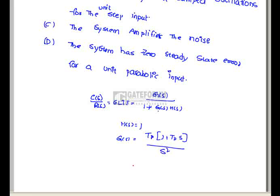But Statement C: The system amplifies the noise. Adding zero - because the proportional derivative controller acts as a high-pass filter, so there is a possibility of amplifying the noise too. So Statement C is also correct.